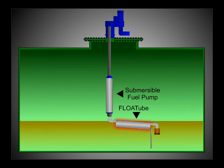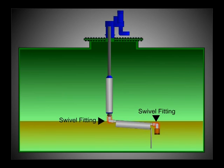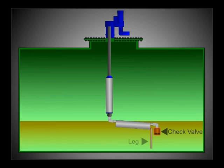The float tube allows the pickup line to float. The swivel fittings allow the float tube to move smoothly and reliably according to the level of the tank. The check valve keeps the pump primed. The leg ensures that the float tube does not bottom out in the tank.